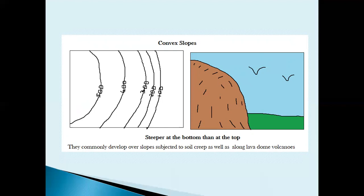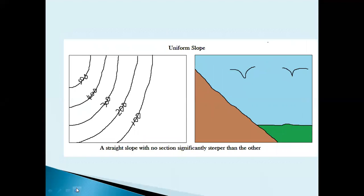It is that slow movement — whether soil creep or acidic lava — that contributes to the convex shape, whereas in the case of the river, rapid movement of water along the slope helps to shape the concave slope. For a uniform slope, also called an even slope, the contour lines are almost the same distance apart, with no section significantly steeper than another, giving a straight slope in cross-section.